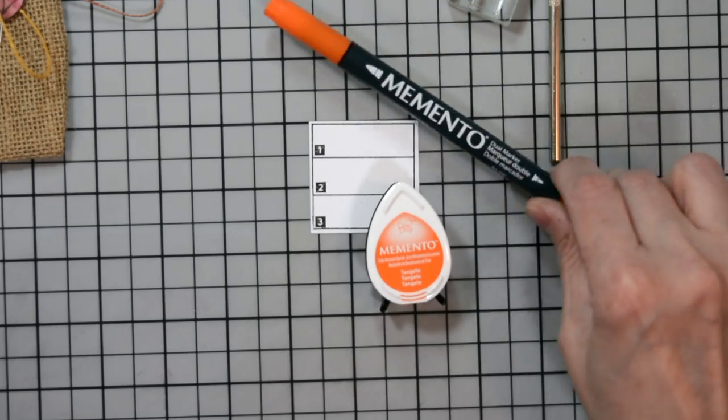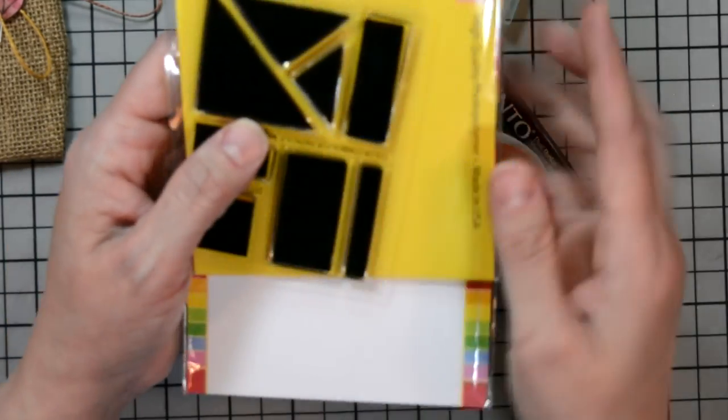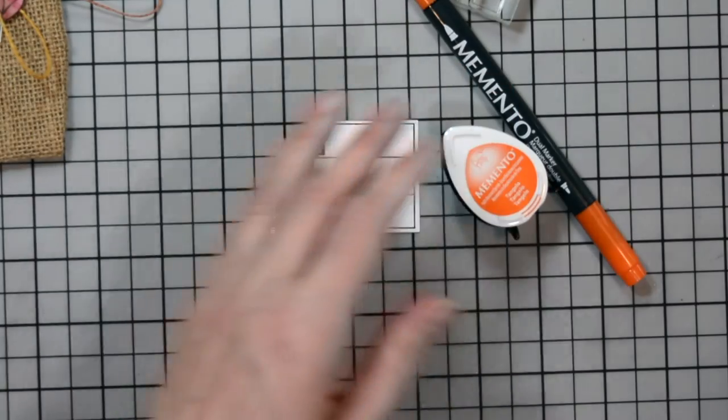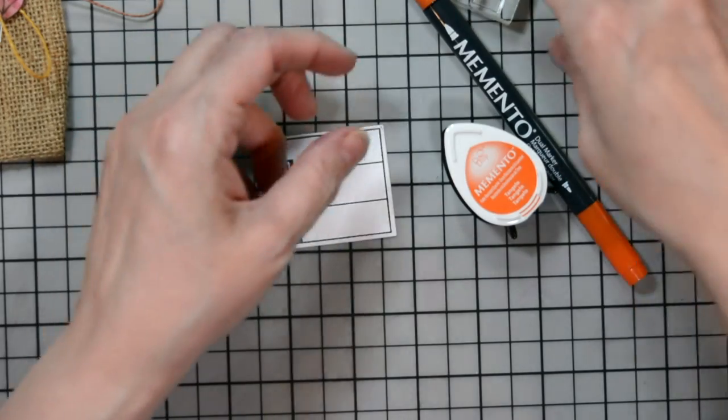Before we start our project, I thought I'd share how I swatch out my inks and markers. I use waffle flower color combos for ink pads stamp and die set. I went ahead and stamped and die cut my swatch card.